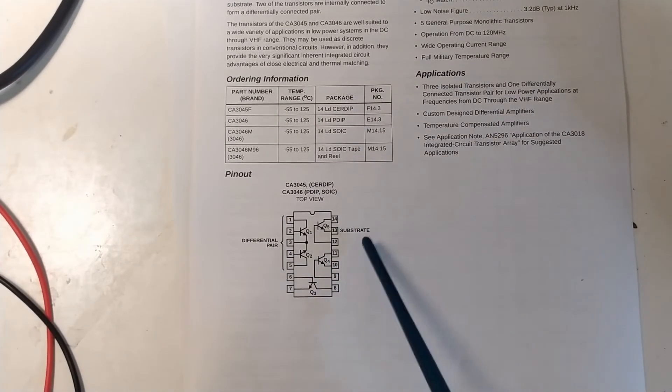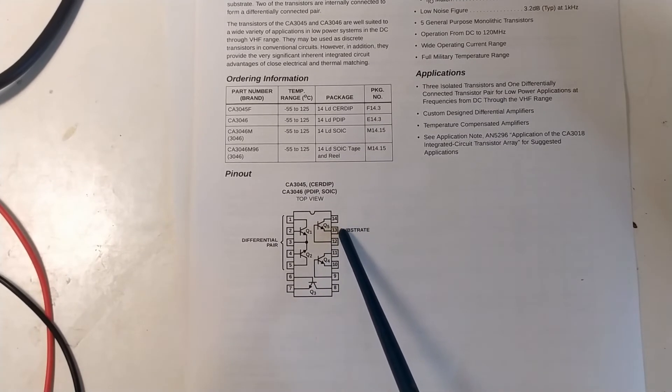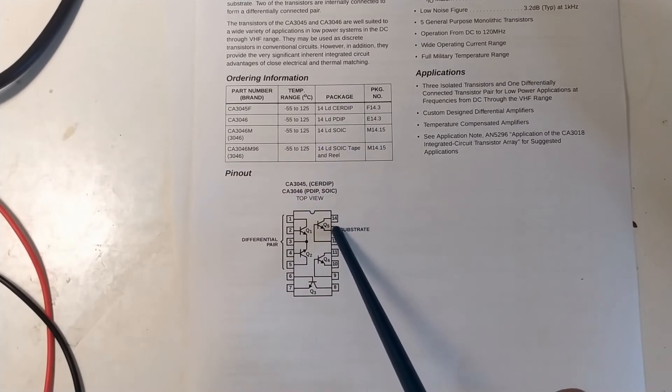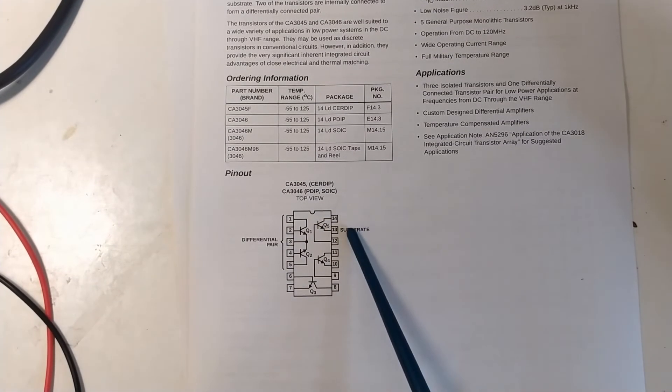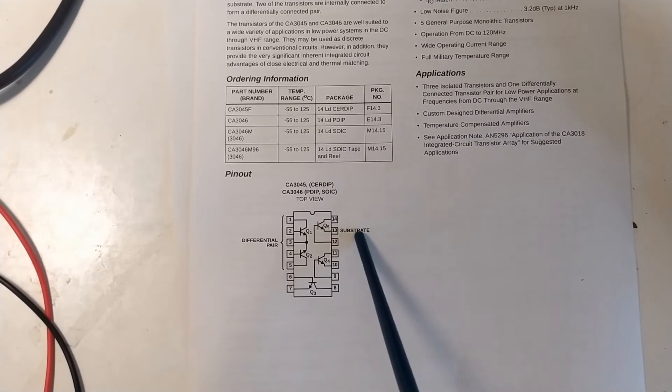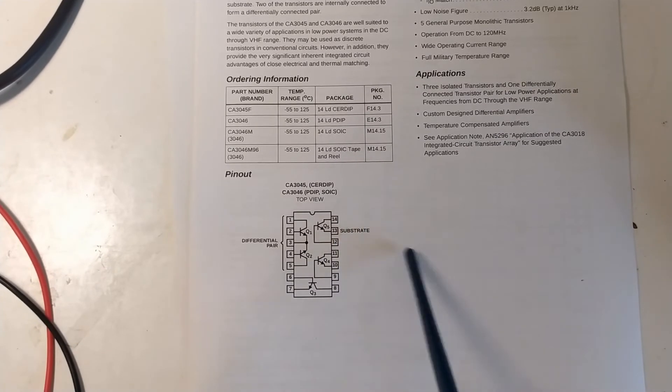One thing that you have to think about if you're using this chip is this one, Q5 up here, is bonded to the substrate. The emitter here is actually connected to the substrate, so this pin 13 here should be connected to the lowest point, the one with the most negative potential in the circuit.